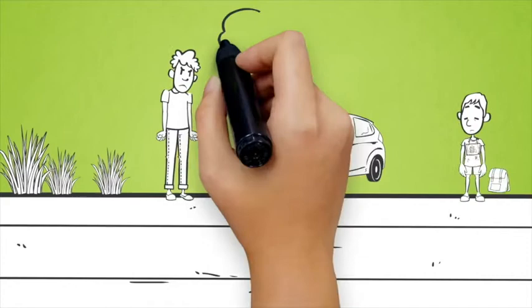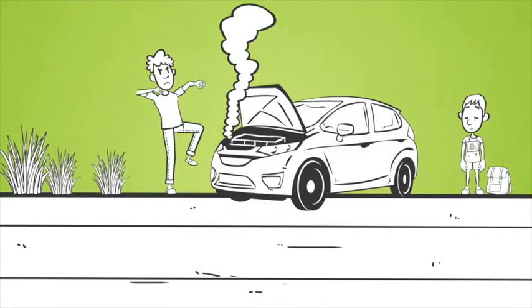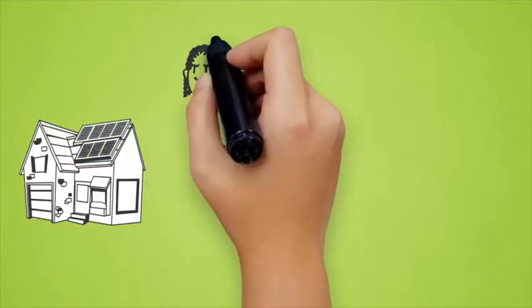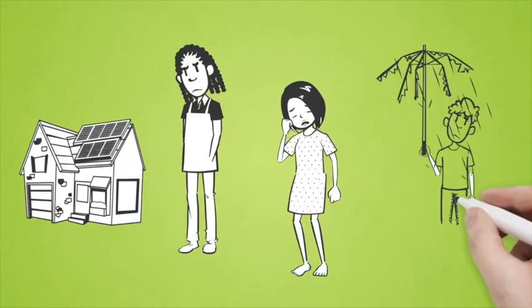Sometimes, things outside of our control can make it difficult to get students to school. For instance, unstable housing, loss of a job, health problems, or other personal issues.